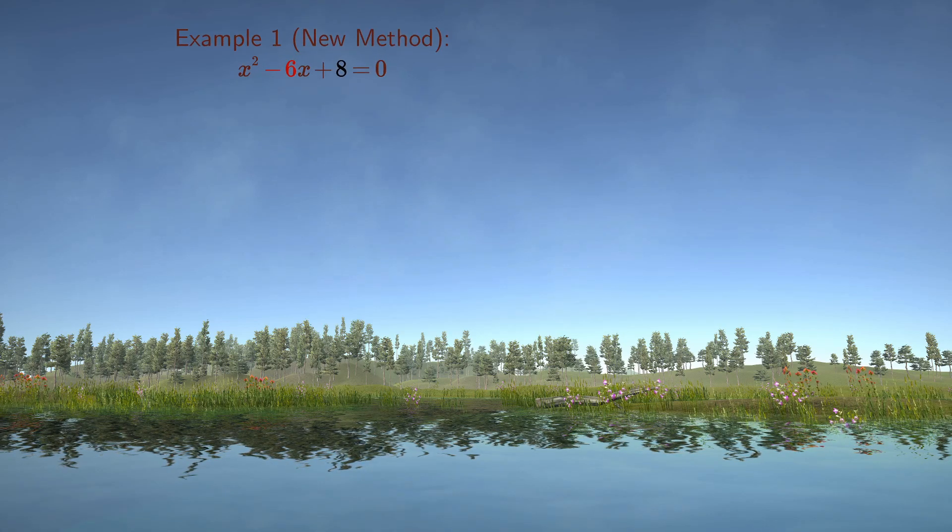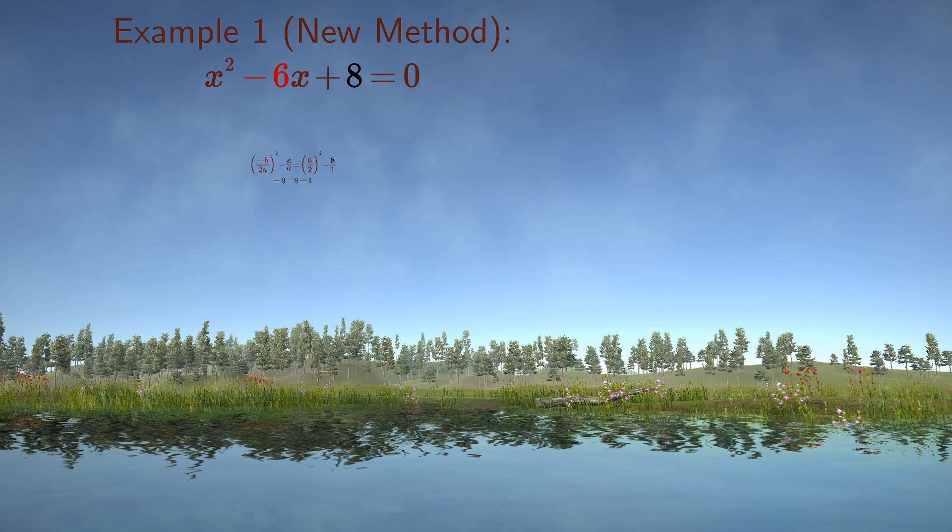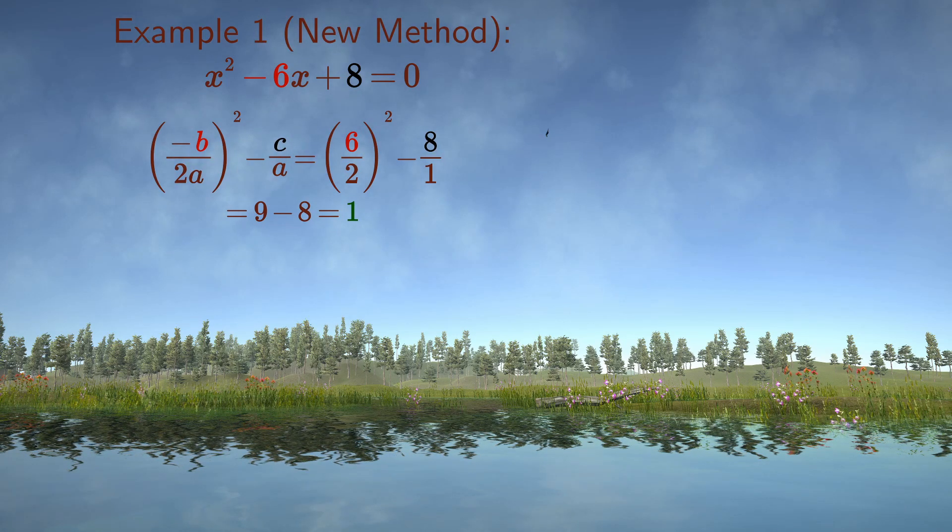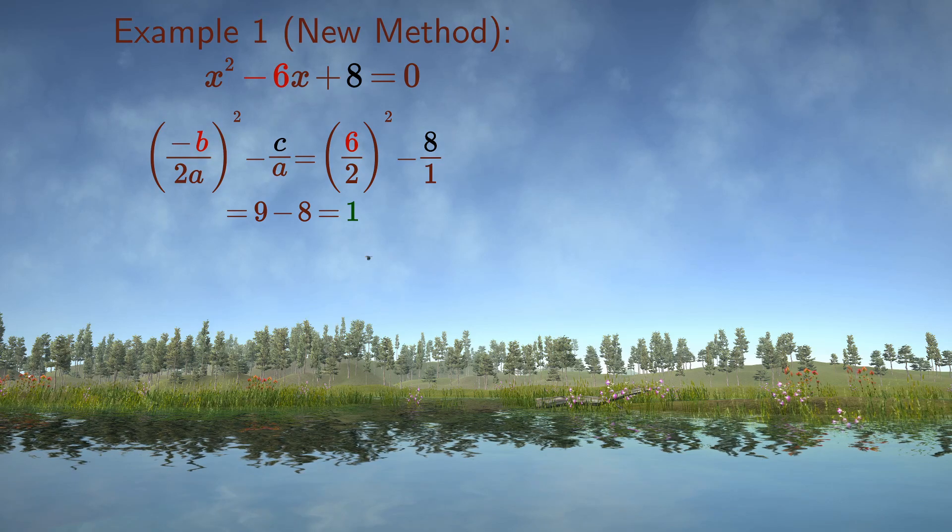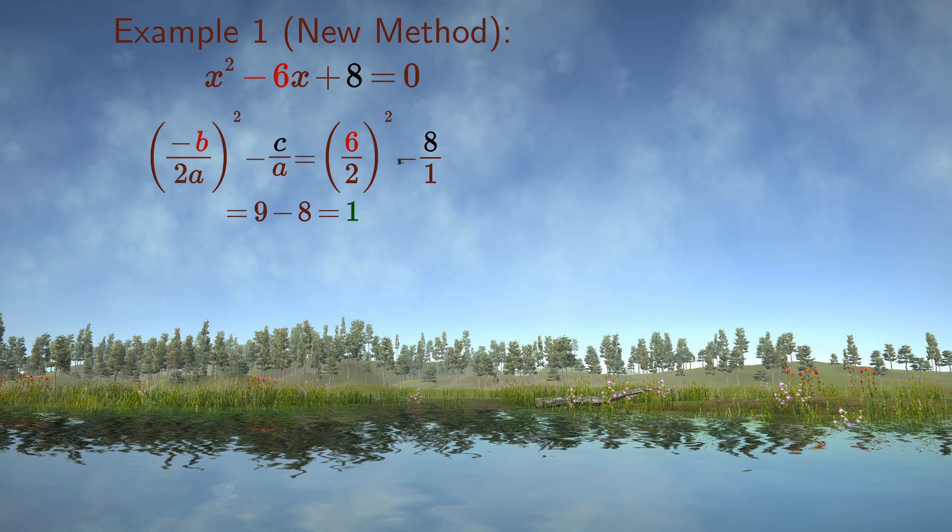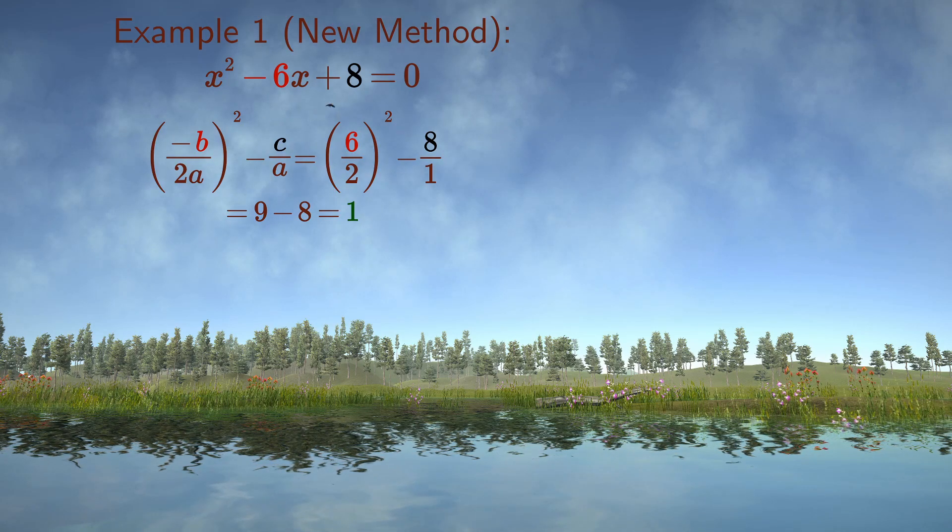Applying the new method we could obtain the first example's roots by first squaring minus b over 2a and then subtracting c over a. This gives us 6 over 2 squared, or 3 squared, which is 9, from which we subtract 8 over 1 equals 8 to give us 1.